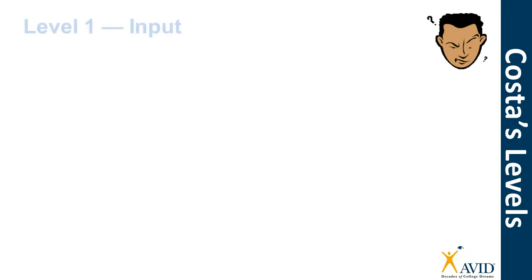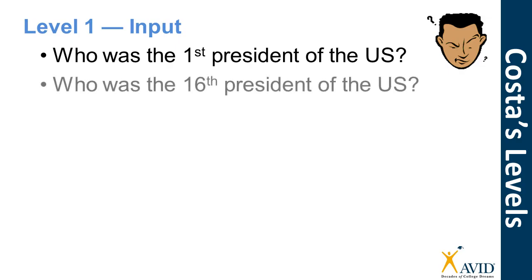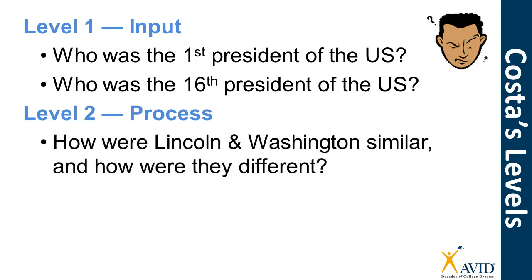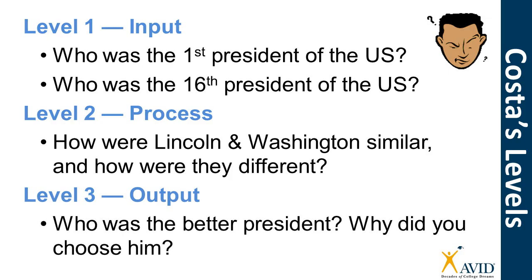Let's see what this might look like in a typical history classroom. A level one question might be: who was the first president of the United States, or who was the 16th president? These questions are basic and can be answered quickly — the information is probably already in your brain, and if it isn't, you can find it in a book or on a website, but the questions involve very little complex thought. A level two question would be: how are Lincoln and Washington similar and how are they different? This involves more time, effort, and thought, and requires the information from level one. A level three task is the most involved: who is the better president and why? This requires you to come up with your own opinion and use information acquired in levels one and two, taking the longest to answer and involving the most thought.